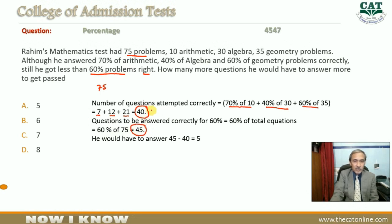He has 40. This means 45 minus 40 equals 5. If he answers 5 more questions correctly from 40, that makes 45 questions. Therefore, the answer to this question is option A.